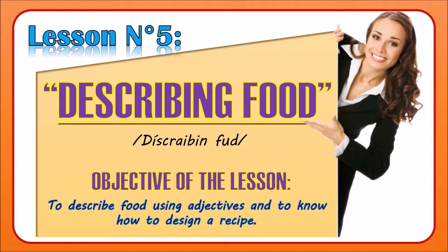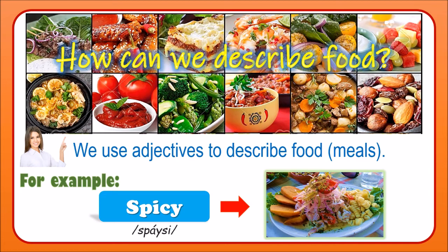Hi students of 4th and 5th grade secondary. Today the lesson is describing food. We are going to learn new adjectives and also how to design a recipe. How can we describe food? We have to use adjectives to describe some meals. For example, to describe ceviche, we can say it's spicy. Let's practice and check out all those adjectives that help us describe food.